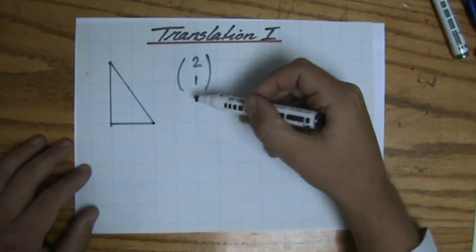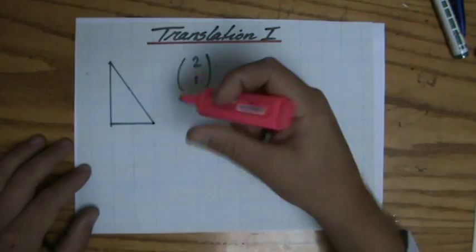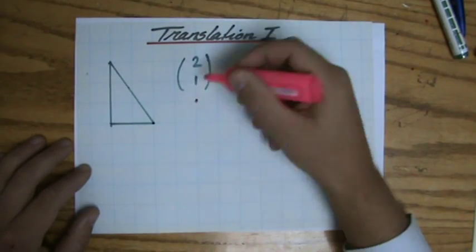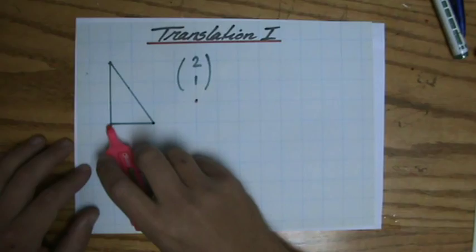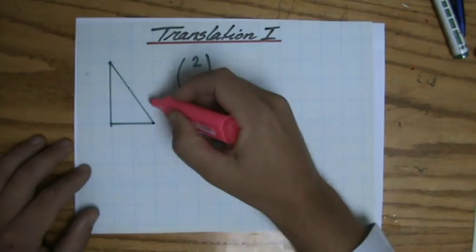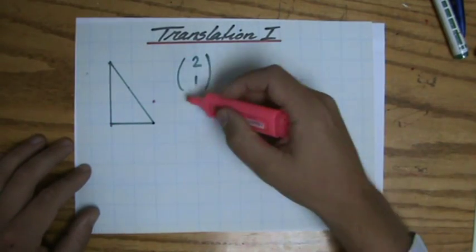to the right and then one up. There we go. Let me do it in pink. Let's go for that point. Two, one—so two to the right and one up. And basically, I could just now